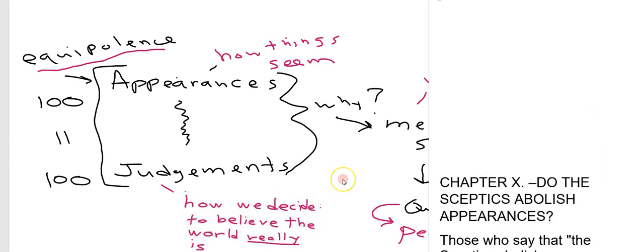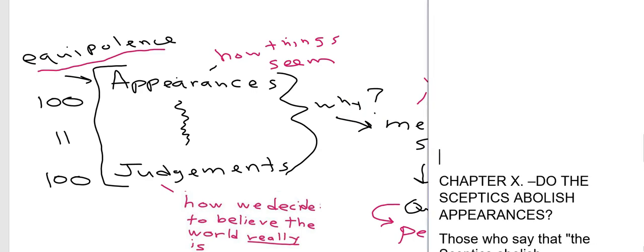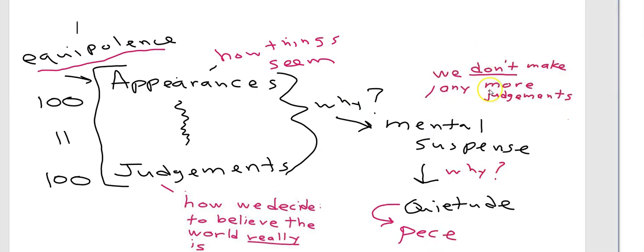Okay, so going back to this, we would be asking ourselves, okay, Sextus, are you saying that by the time we get to this state of quietude, we just have no idea what we think or what we should do? Won't we just be paralyzed? And Sextus wants to say, well, no, because one of these elements is still left intact for us. We don't deny appearances. We don't deny that the sky seems blue to us.